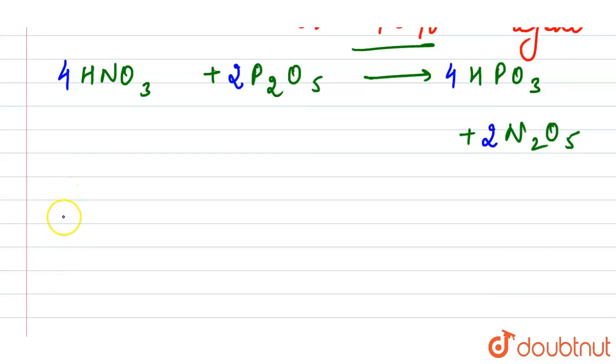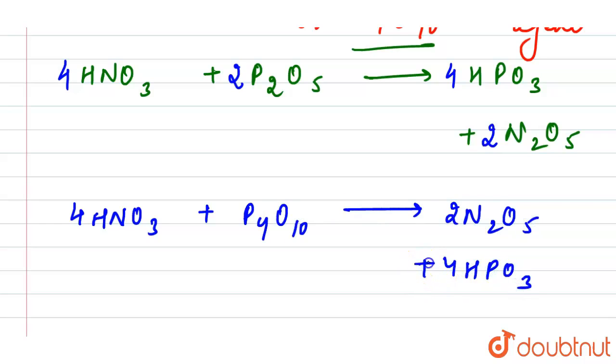...that is 4 HNO3 plus P4O10, and here we have 2 N2O5 plus 4 HPO3. It can also be written in this way.